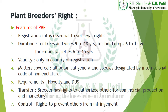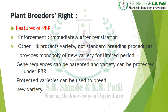Regarding authority of transfer, the breeder has the right to authorize others for commercial production and marketing. Next is the right to prevent others from infringement. Plant Breeders Right can be enforced immediately after registration. This act only protects the variety, not standard breeding procedures. It provides monopoly of a new plant variety for a limited period. Gene sequences can be patented and the variety can be protected under PBR, and protected varieties can be used to breed a new variety.